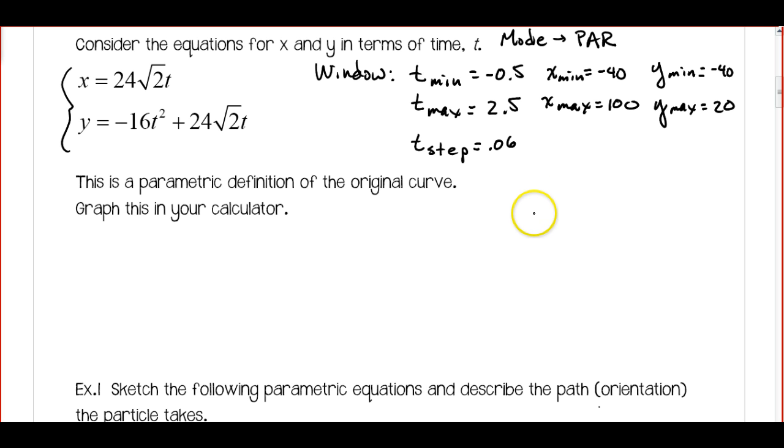So if you graph it, you're going to notice it's going to look something like this. And pay particular attention when you hit that graph, how it graphs it out, because it's graphing those positions out over time. So the direction that that's going is important. So it's going to look something like this. We start at a point here, and then it goes up, and it comes back down, and it ends at a point over here.